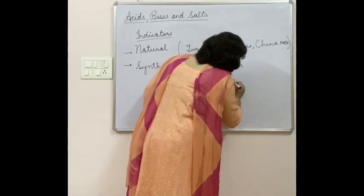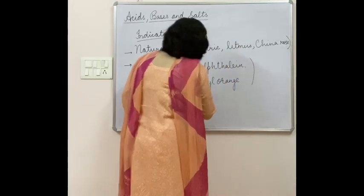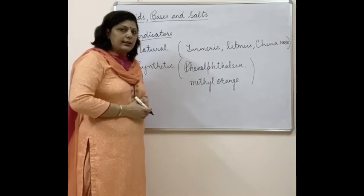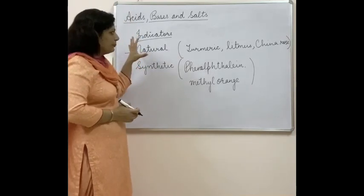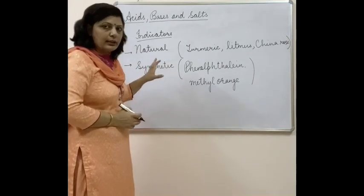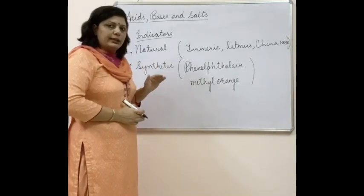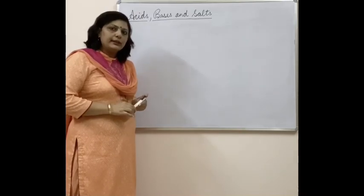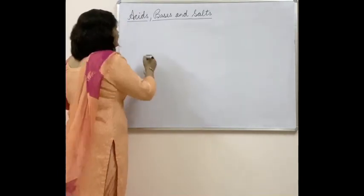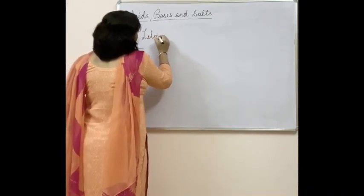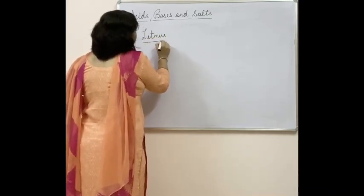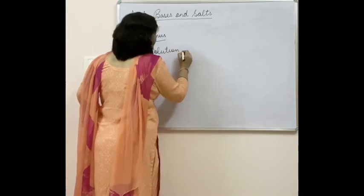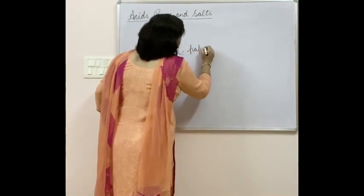Methyl orange is also a synthetic indicator, though it is not given in NCERT, but we mention it to give a broad idea. Now, one by one, I will tell you how these indicators help in detecting whether a substance is acid or base. The first indicator we will read in detail is litmus, which is available as a solution as well as paper strips.